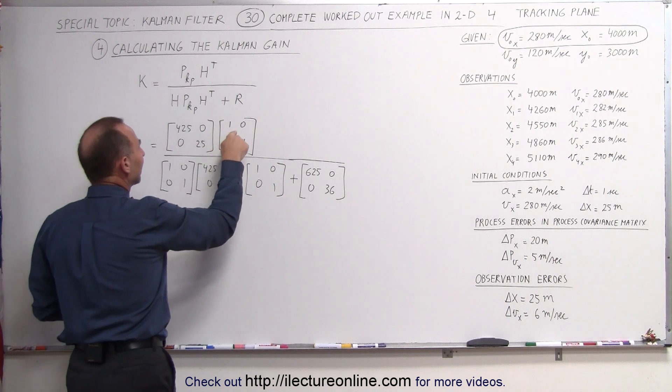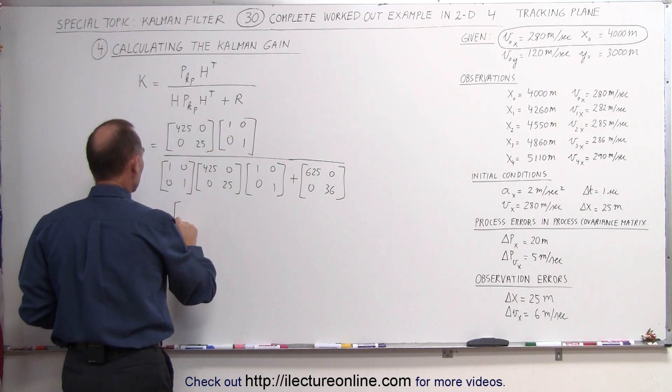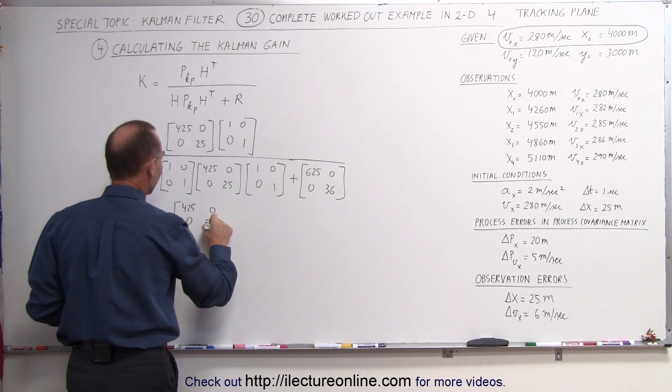Now when we multiply anything times the identity matrix you get itself back. So this becomes equal to in the numerator we get 425, 0, 0, 25.